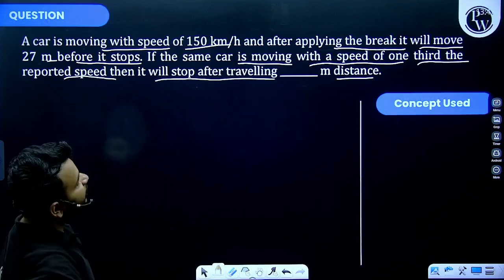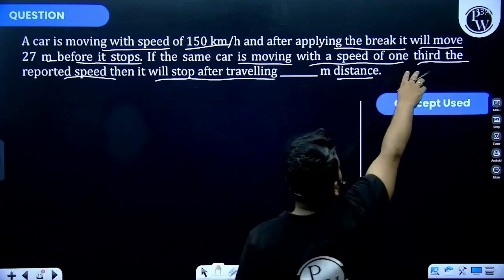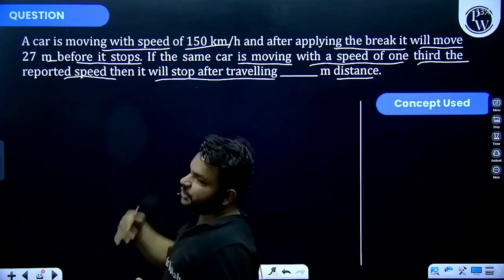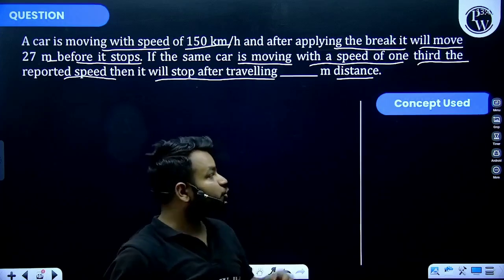If the velocity of car becomes one-third of the initial velocity, then how much distance is required for the stopping of the car?